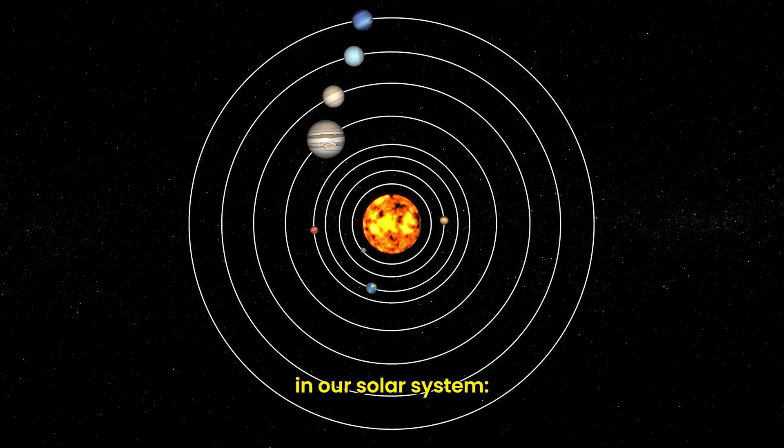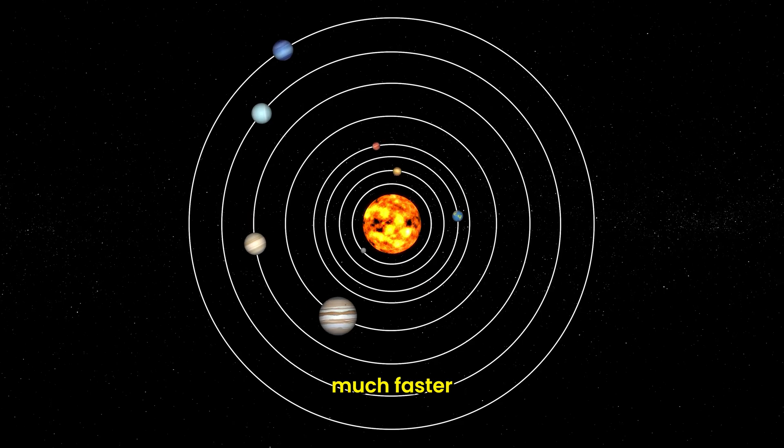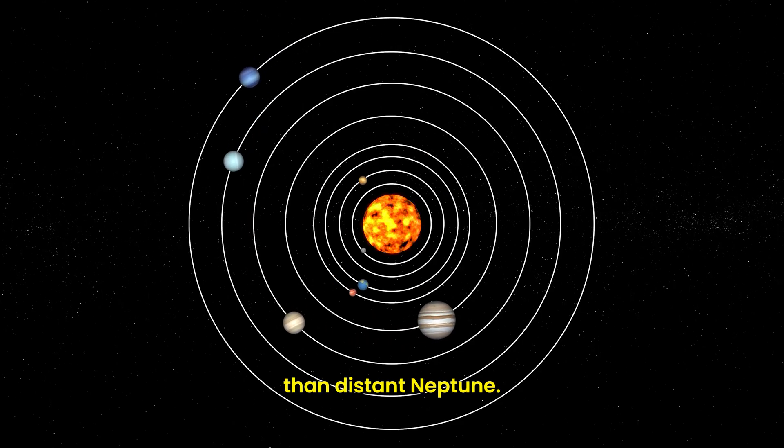It's like planets in our solar system. Mercury zips around the sun much faster than distant Neptune. Simple physics.